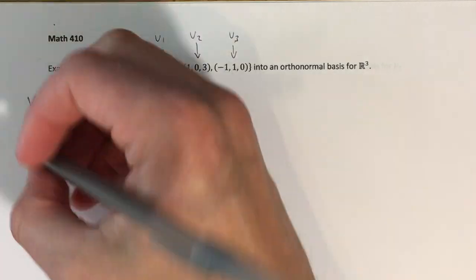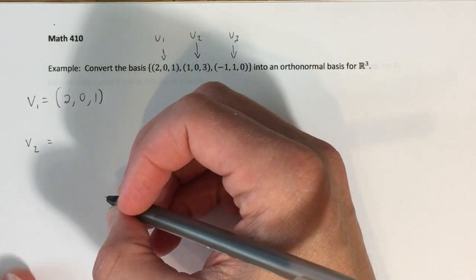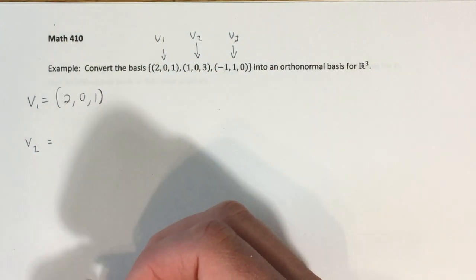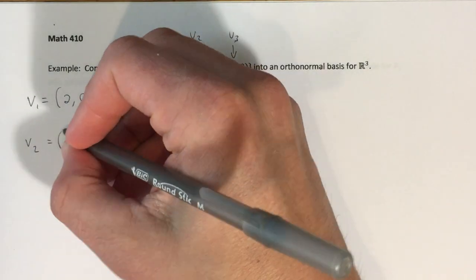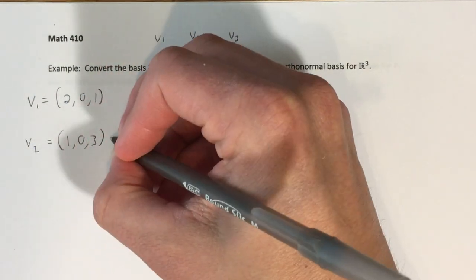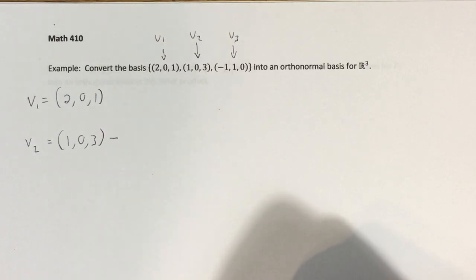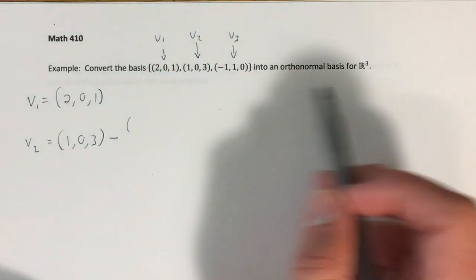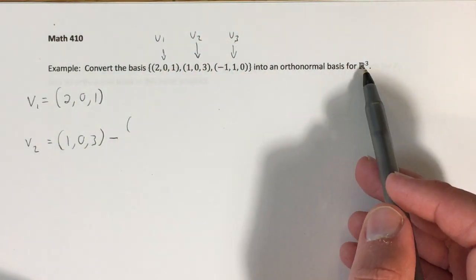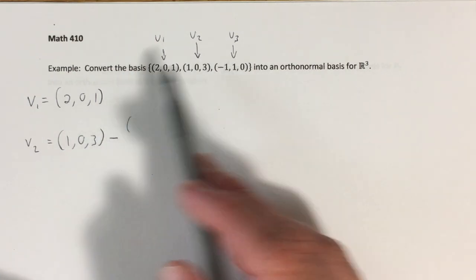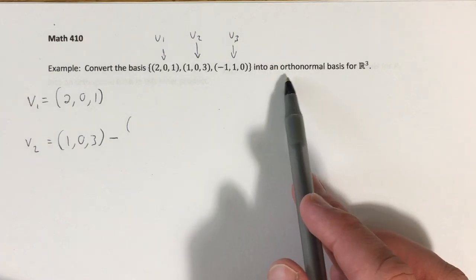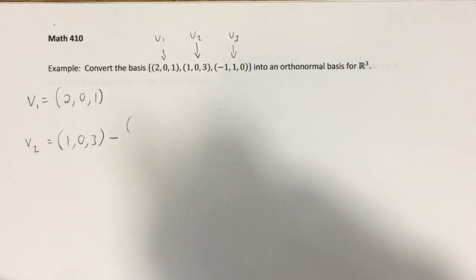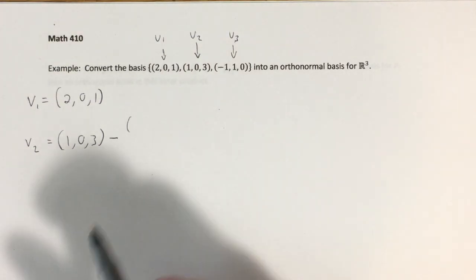Now the next step: V2 is supposed to be U2, so the second basis vector (1, 0, 3), minus the inner product of U2 with V1. Even though it's not stated here, we're assuming that we're working with a standard inner product. That's fairly typical — if you're working in an inner product space and you're not told what the inner product is, you can generally assume it's whatever the standard inner product for that space would normally be, which is the dot product in this case.